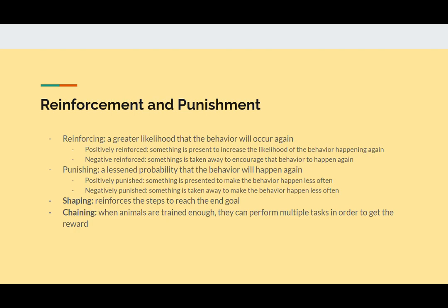When a behavior is positively reinforced, it means something is presented — usually something pleasant — to increase the likelihood of the behavior happening again. When something is negatively reinforced, something is taken away — usually something unpleasant — to encourage that behavior to happen again. When something is positively punished, something is presented, usually unpleasant, to make that behavior happen less often. In contrast, negative punishment has something taken away, usually something pleasant, to make that behavior happen less often.